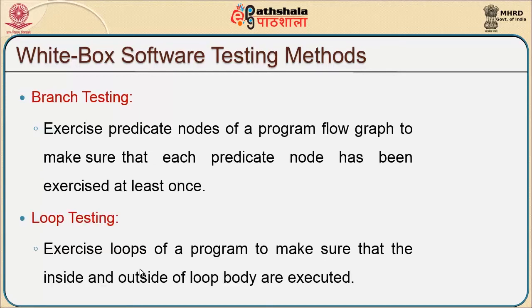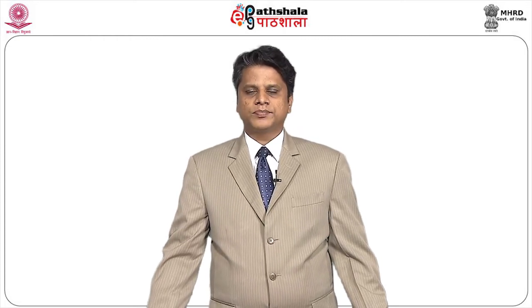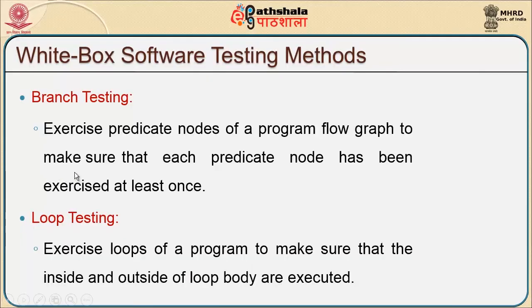In branch testing, every node from which one or more activities emerge is called a branch. We exercise predicate nodes of a program flow graph to make sure each predicate node has been exercised at least once. If I consider a node with two branches moving out, that node is called a predicate node, and we must ensure that I check for both conditions at least once.